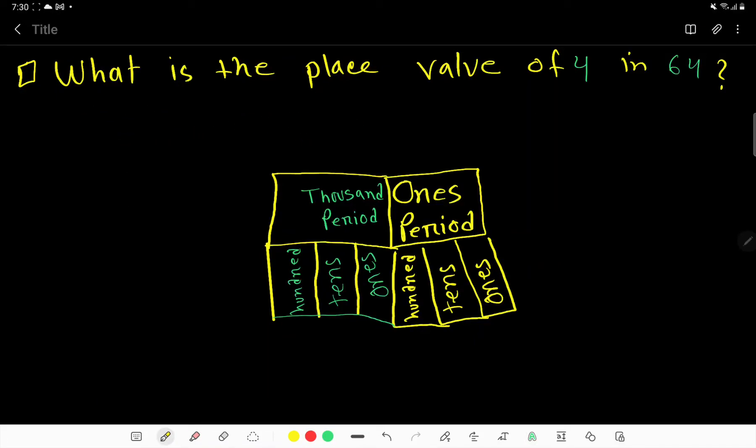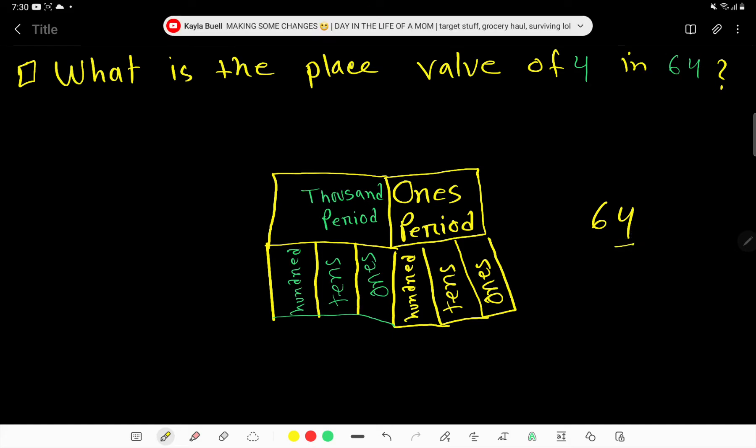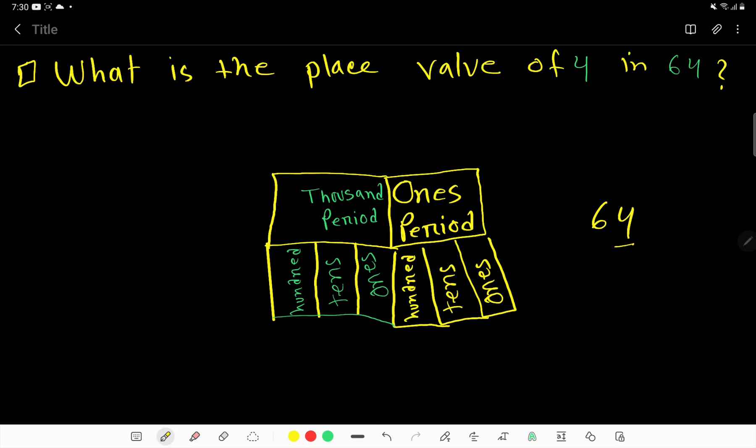What is the place value of 4 in 64? 64 is a number, and we have to find out the place value for 4. The face value of 4 is 4. The face value of a digit is equal to that digit, so this is easy.